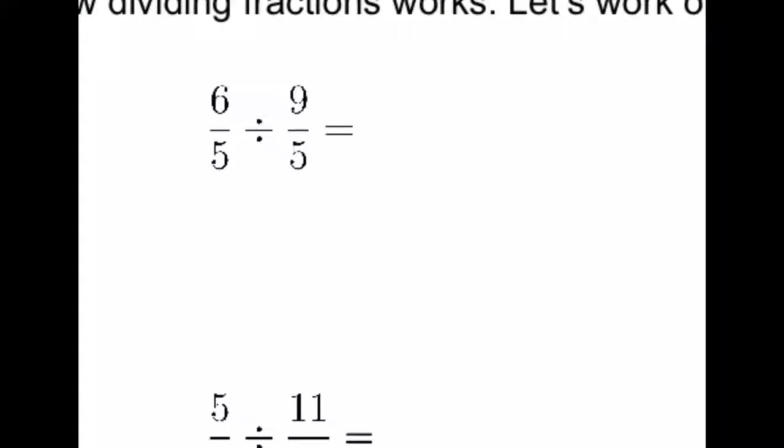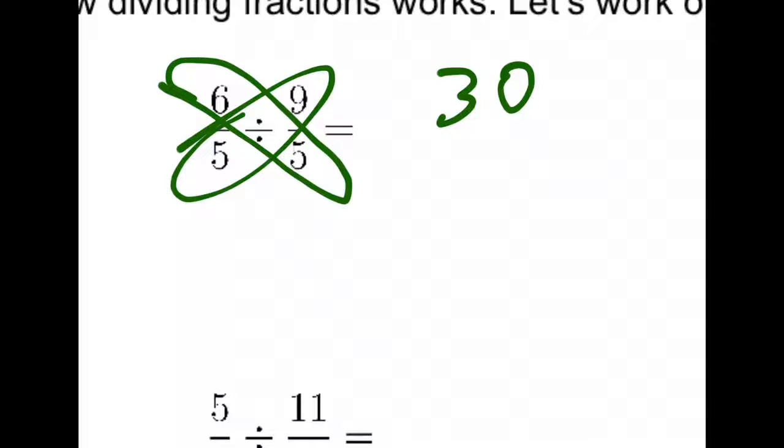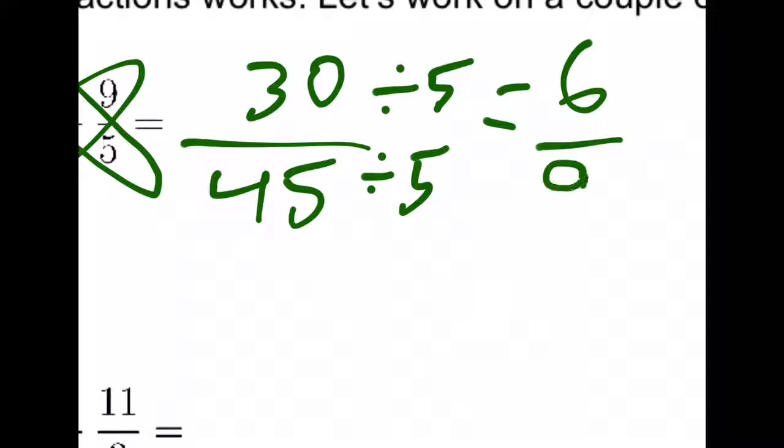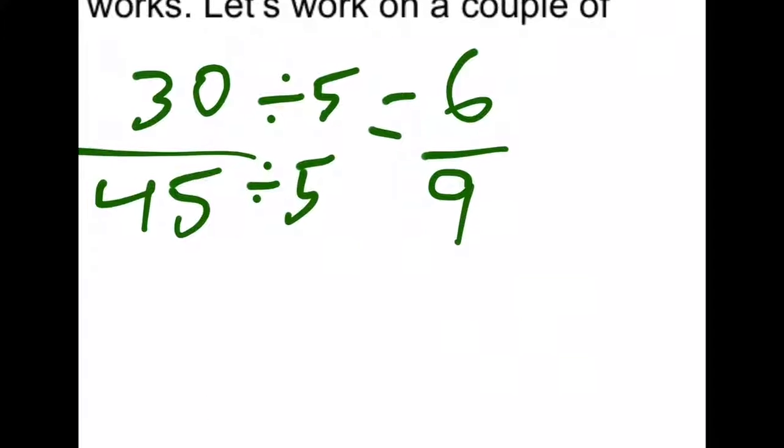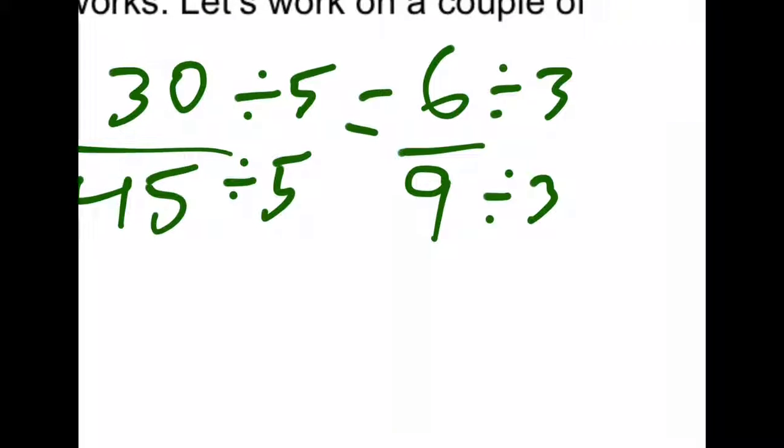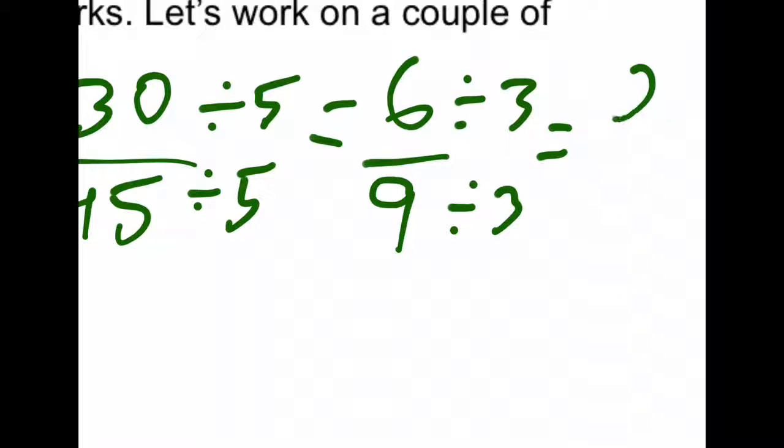Let's try another one. We'll begin by multiplying 6 times 5 to get 30 on top and 9 times 5 to get 45 on bottom. We might notice that 5 is a factor for both of these, so let's divide out 5 and we get 6 on top and 9 on bottom. There was a larger factor, so we can divide 3 out of both of these and we get 2 thirds.